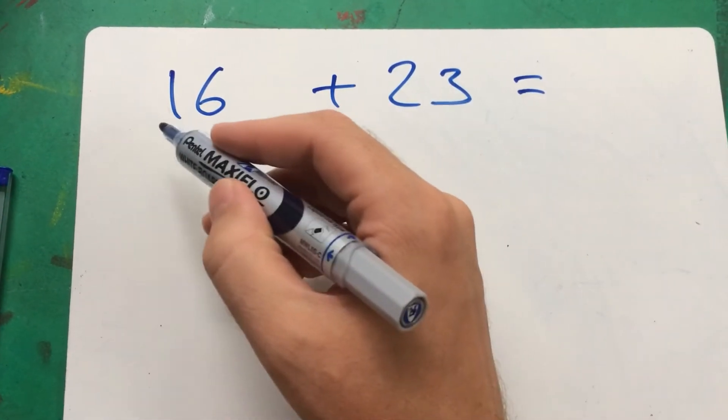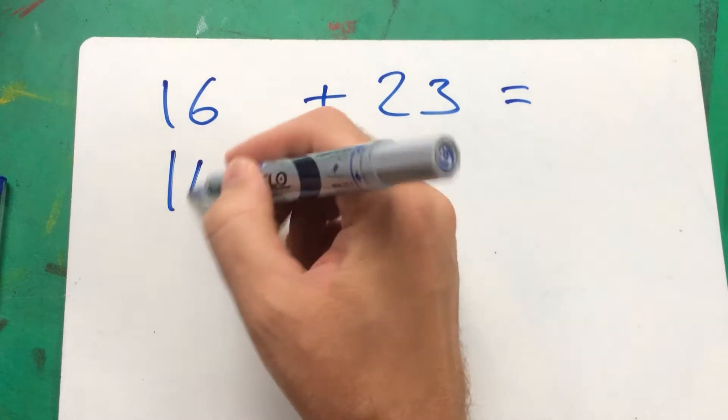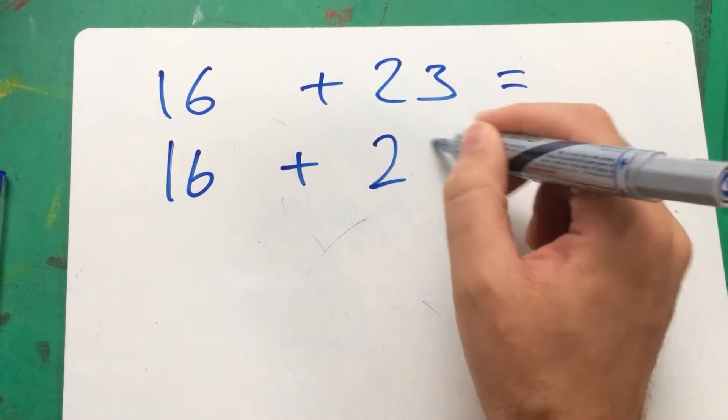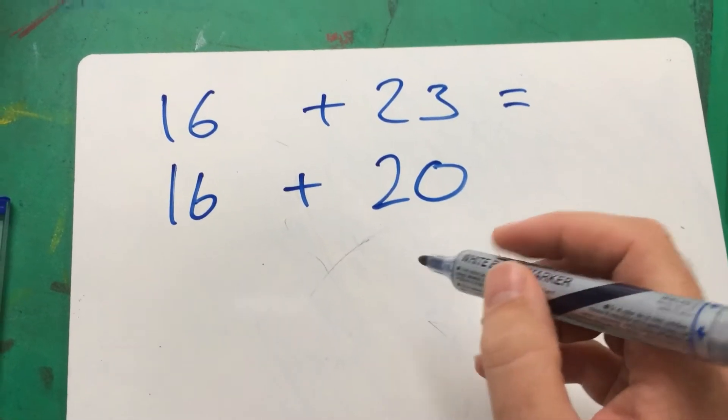We're going to keep 16 as it is: 1 ten and 6 units, but we're going to split 23 up into its tens and leave its units for the moment.